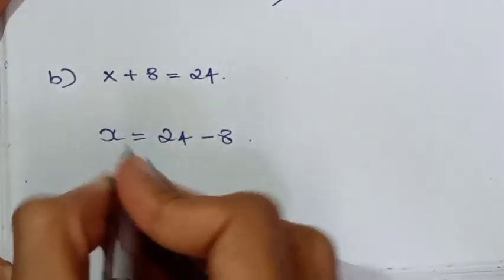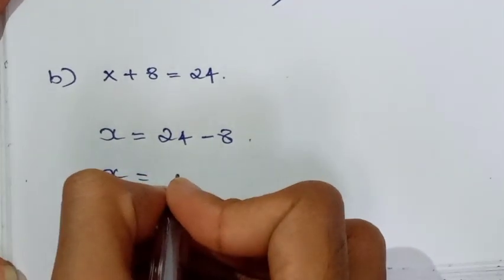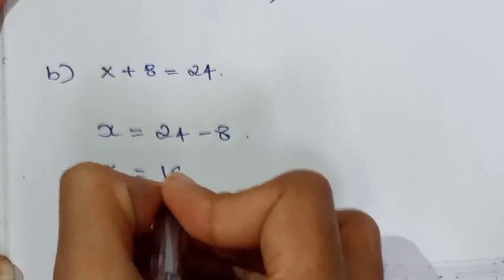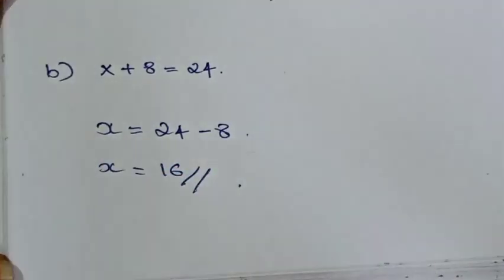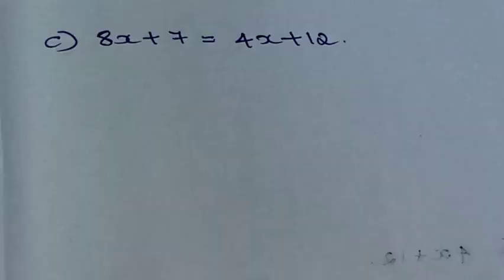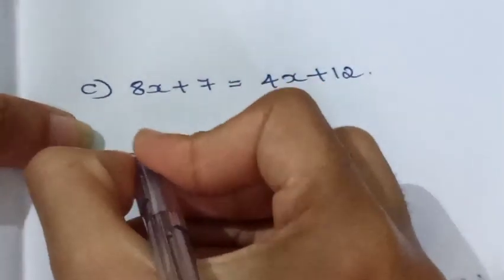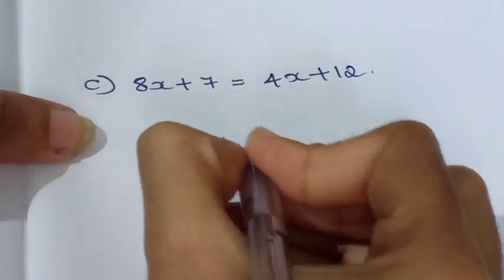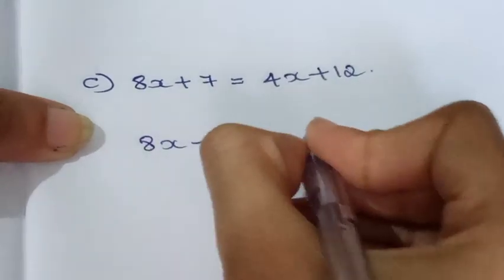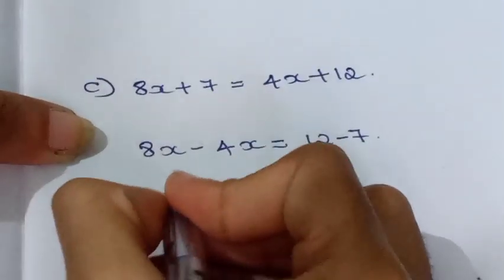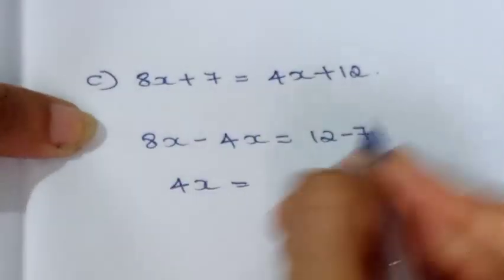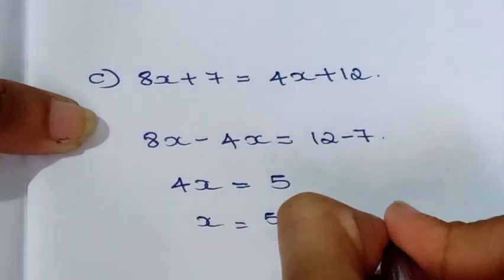Next: 8x plus 7 equals 4x plus 12. Bringing like terms together: 8x minus 4x equals 12 minus 7, so 4x equals 5, giving x equals 1.25.